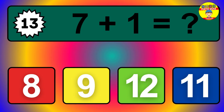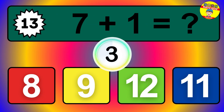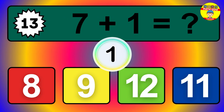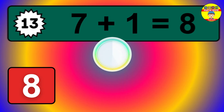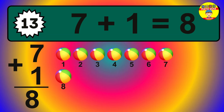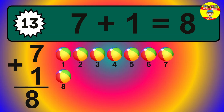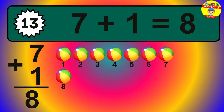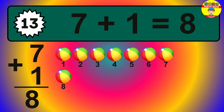Question 13. 7 plus 1 equals what? So the answer is 7 plus 1 is 8. Let's count it: 1, 2, 3, 4, 5, 6, 7, 8.